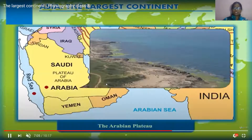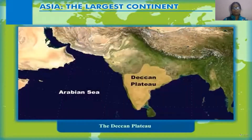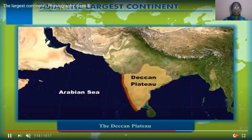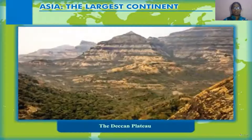The Deccan plateau is covered on all sides by mountains — the Eastern Ghats and Western Ghats on the eastern and western sides, and the Satpura ranges on the northern side.